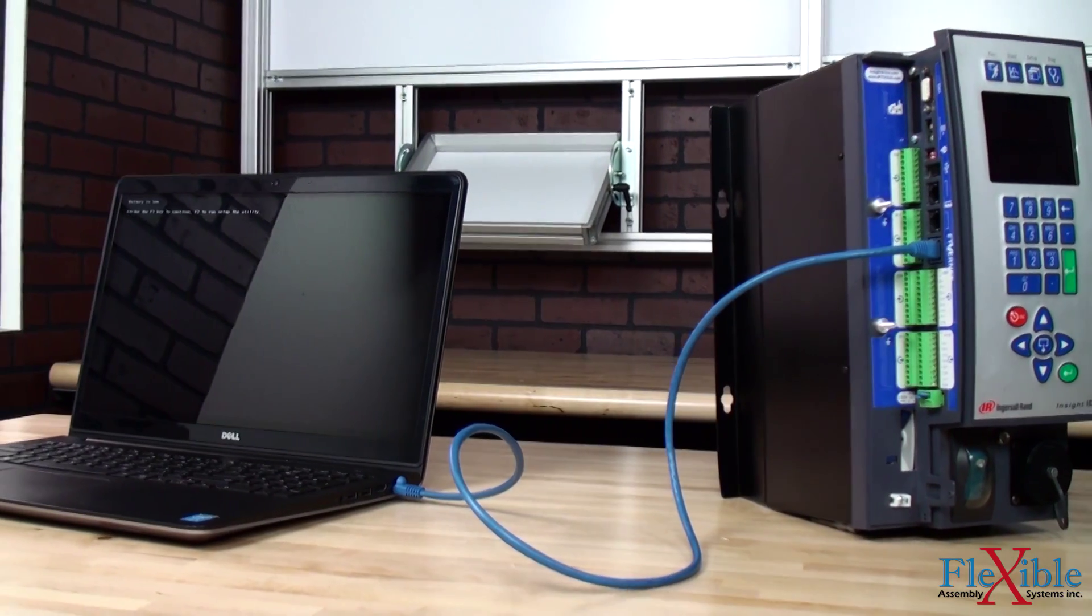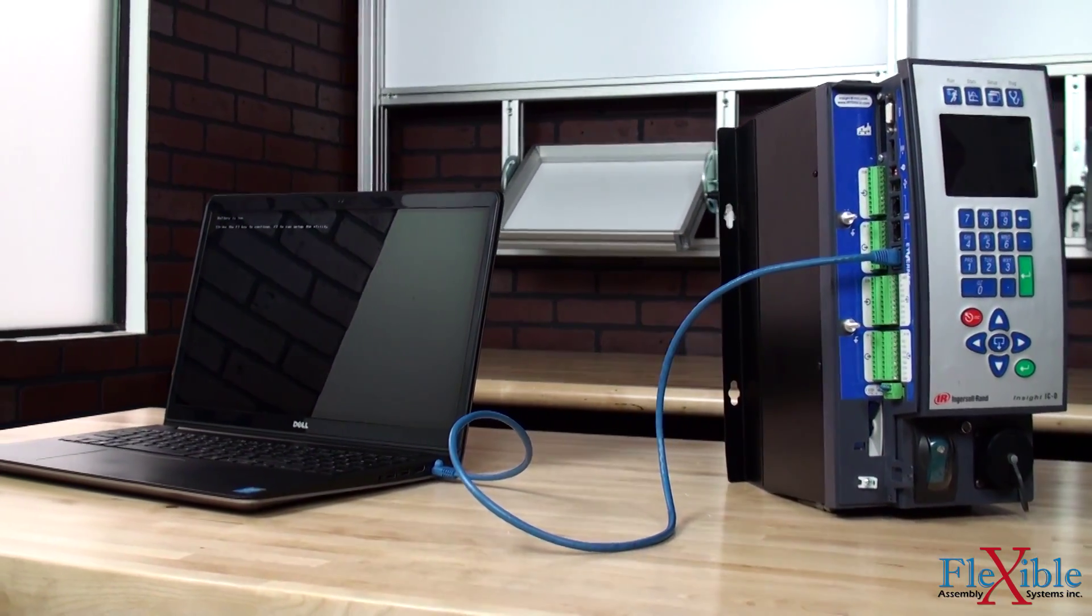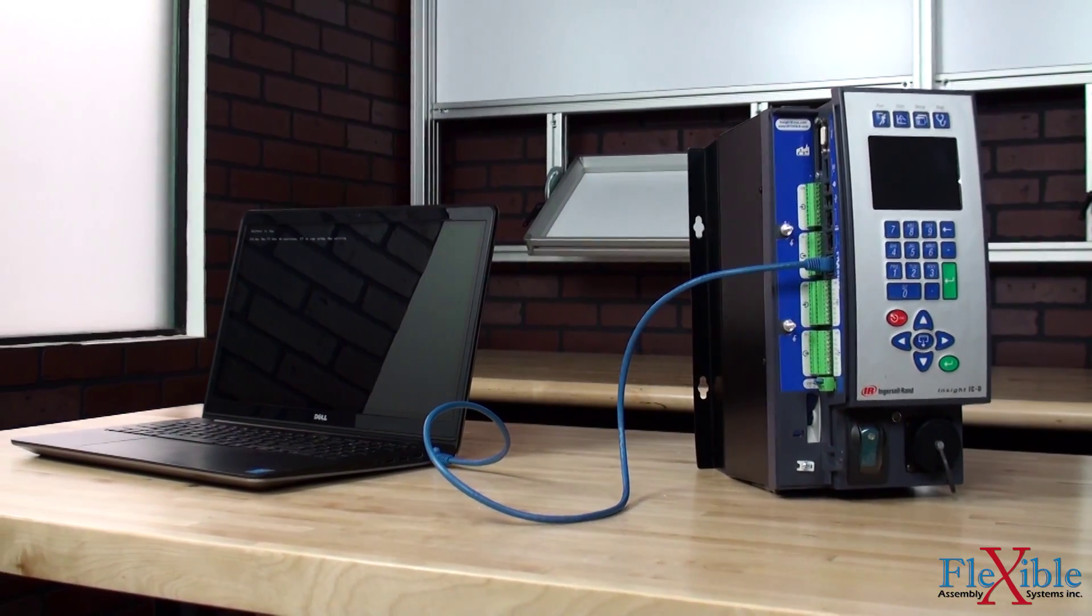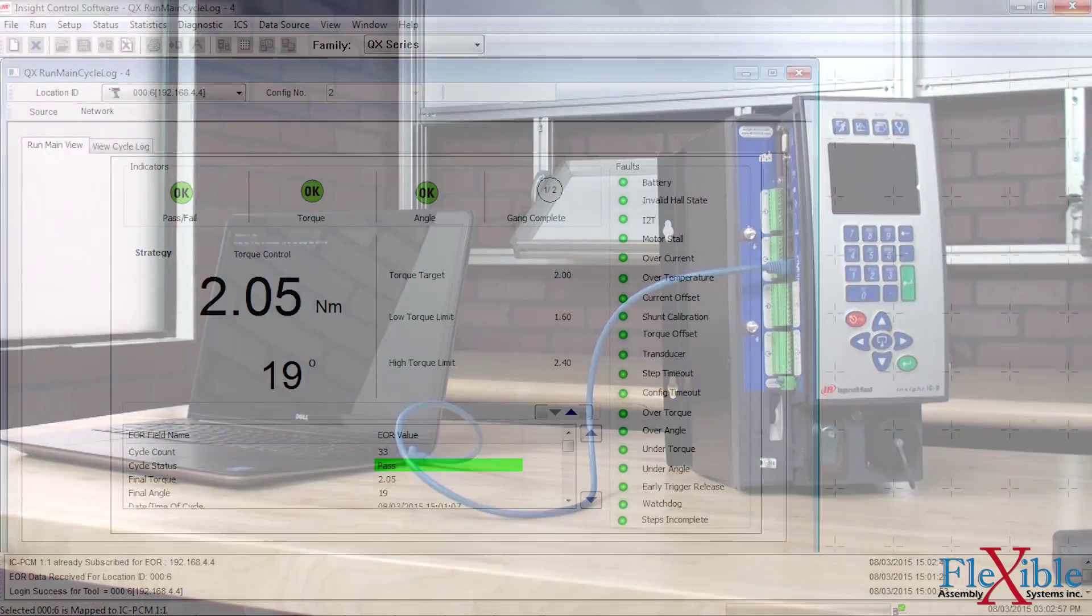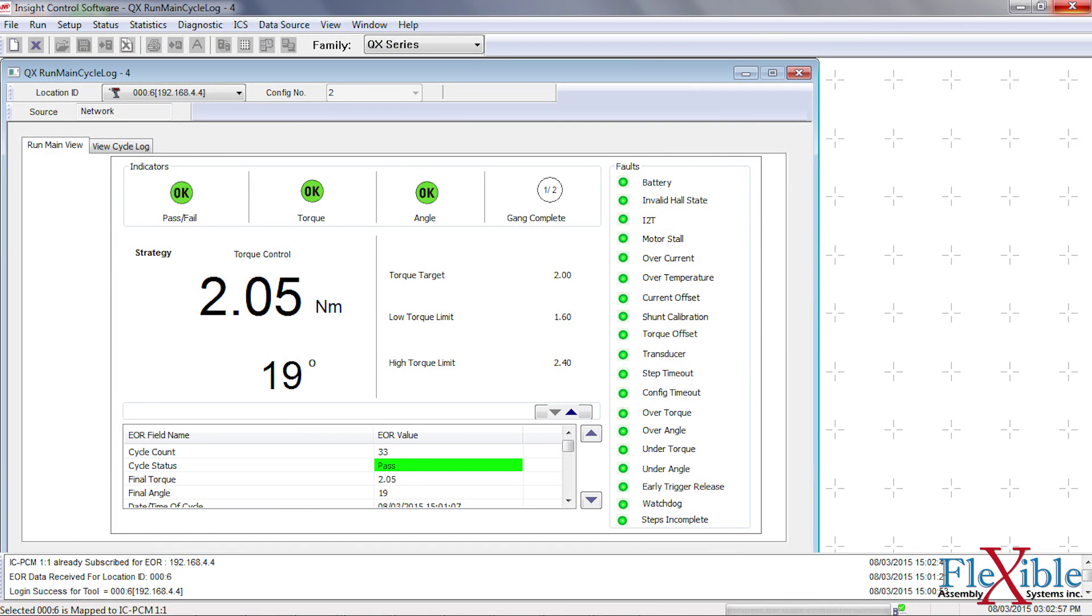ICS Connect software is supplied with an IC1D controller and gives the operator the ability to access and program basic fastening strategies, as well as view cycle data with a single controller via a 1 to 1 Ethernet connection.